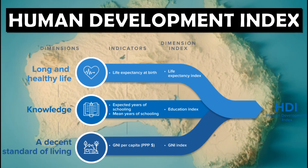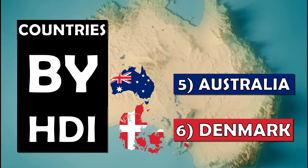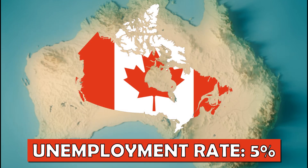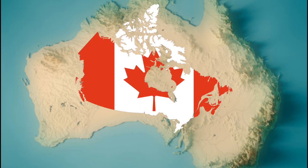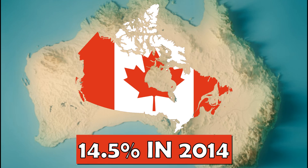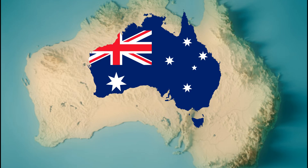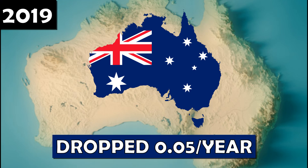The Human Development Index measures quality of life including healthcare, life expectancy, and average income. Australia scores 0.951, ahead of Canada's 0.936, making Australia the 5th best and Canada the 15th best. Canada's unemployment rate is 5%, which is 1.4 times more than Australia's 3.5%. Canada's poverty rate is 11.6, down from 14.5 in 2015. Australia's poverty rate is 12.4, down from 12.8 in 2015.